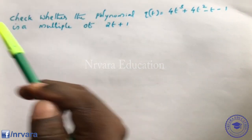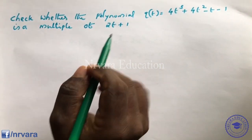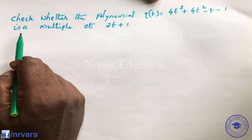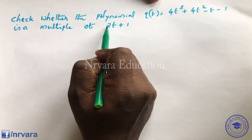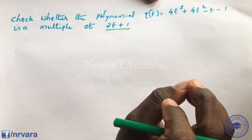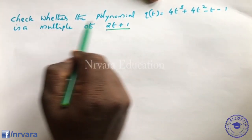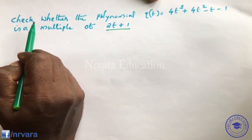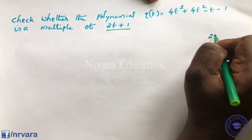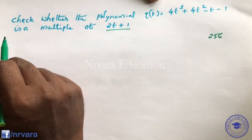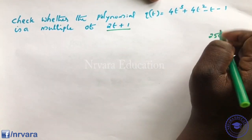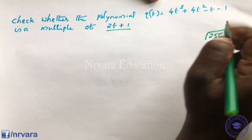Next, check whether the polynomial q(t) is a multiple of (2t + 1). We need to verify: is 256 a multiple of 8? Yes, 256 is a multiple of 8.